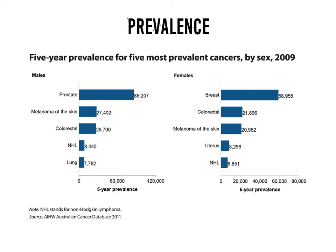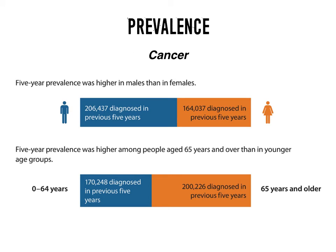Looking at the prevalence of cancers by sex, you can see the number of people that have prostate cancer — 86,207 — as an example of prevalence for that particular cancer. Breast cancer dominates for females. There is a slight difference around melanoma of the skin: more males have melanoma, placing it second compared to colorectal or bowel cancer for females. The five-year prevalence of cancer was higher in males, particularly in the 65 and over age group, as people are more likely to develop cancer as they age.